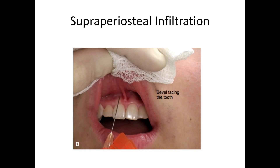First, select the tooth that you are trying to anesthetize and dry with gauze. You can then apply a topical anesthetic to the area using benzocaine or lidocaine gel. Pull the lip away from the teeth and insert the needle with the bevel facing the teeth at the mucobuccal junction. Aspirate to ensure that you are not in a vessel and infiltrate 1-2 cc's of 2% lidocaine.